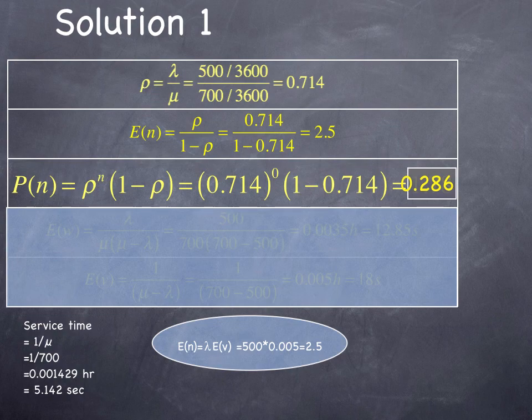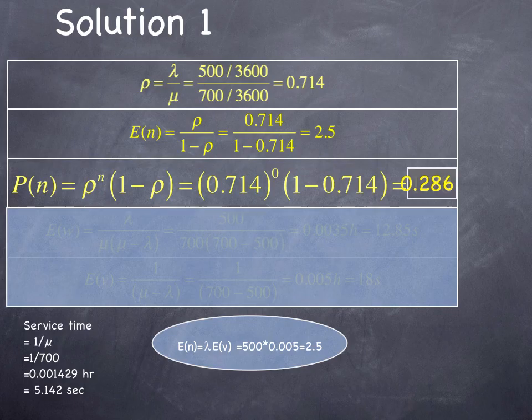Third, we want to look at the probability that there are n vehicles, where n is 0, so the probability the system operator is free. This is rho to the n times 1 minus rho, which is the percentage of time the operator is free, which is 0.714 to the 0 times 1 minus 0.714, which equals 0.286.